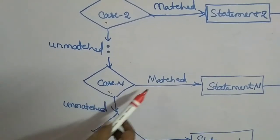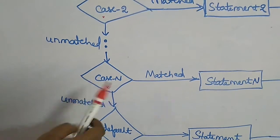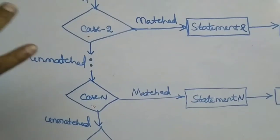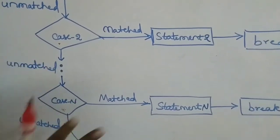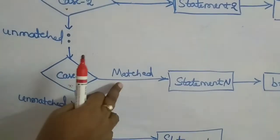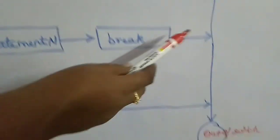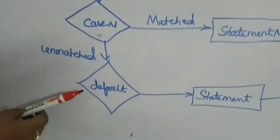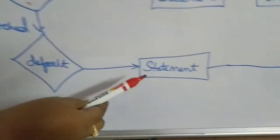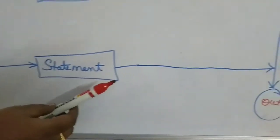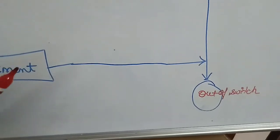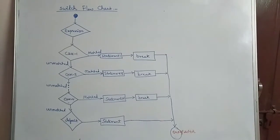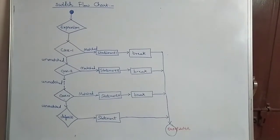Control reaches the last case either when none of the previous cases matched, or when no break was given in a matched case. If the last case also doesn't match, the default label executes. You don't need a break after the default since it is the last statement in the switch — control exits automatically.